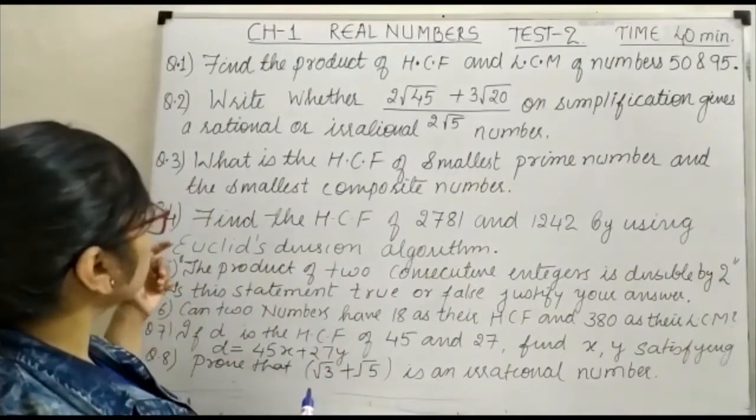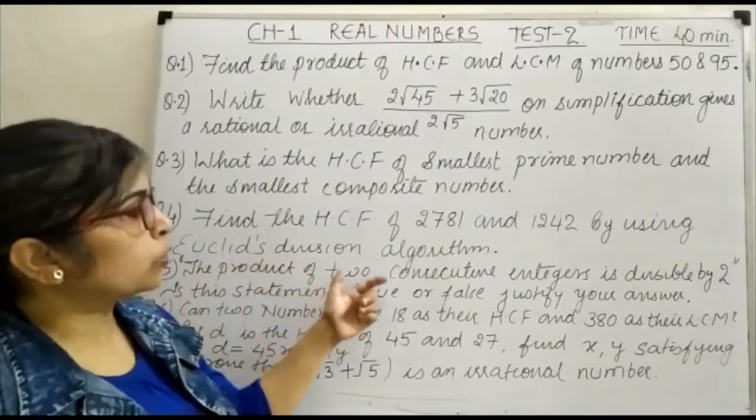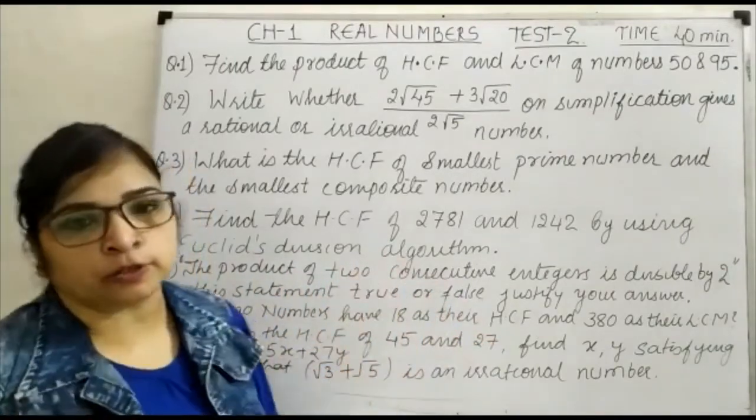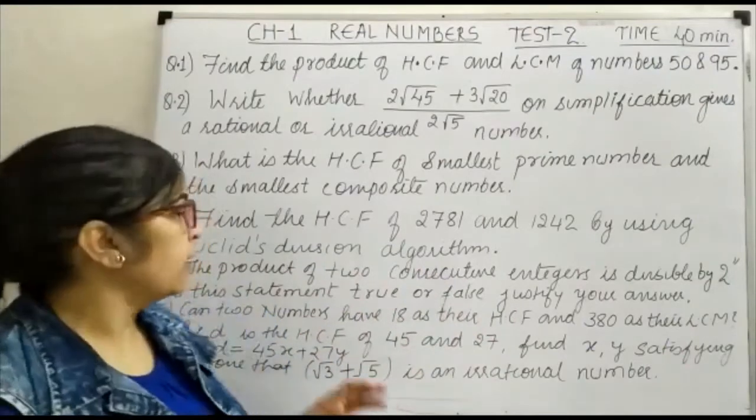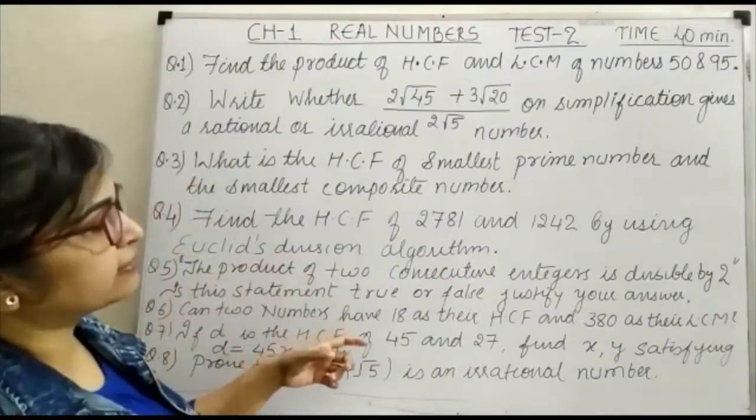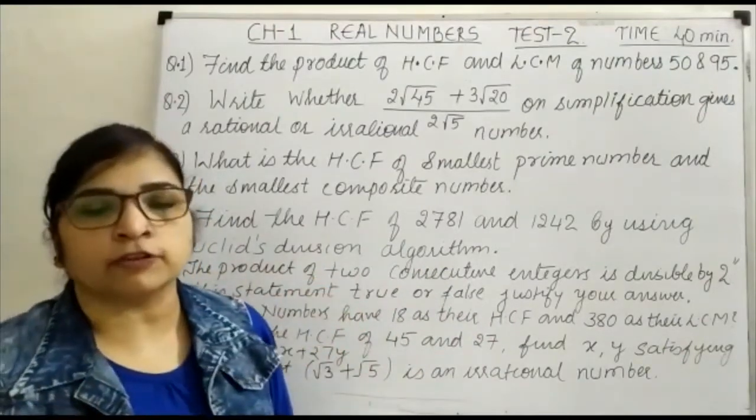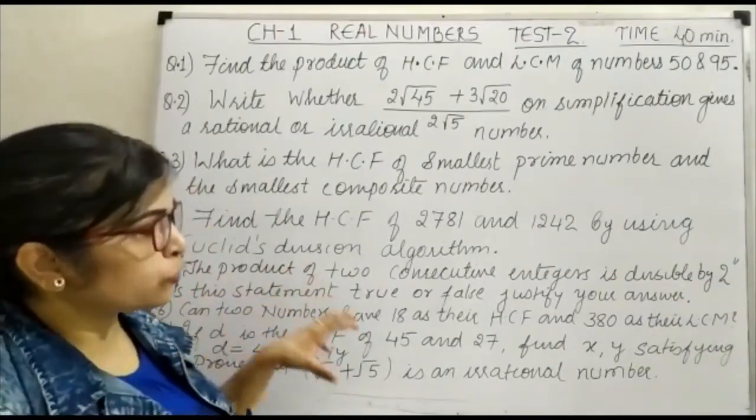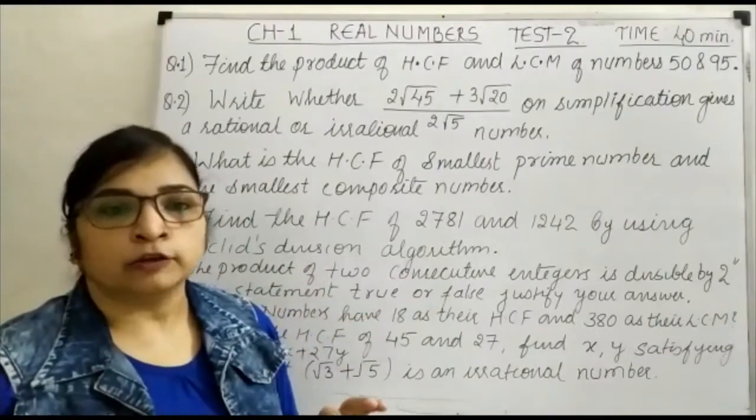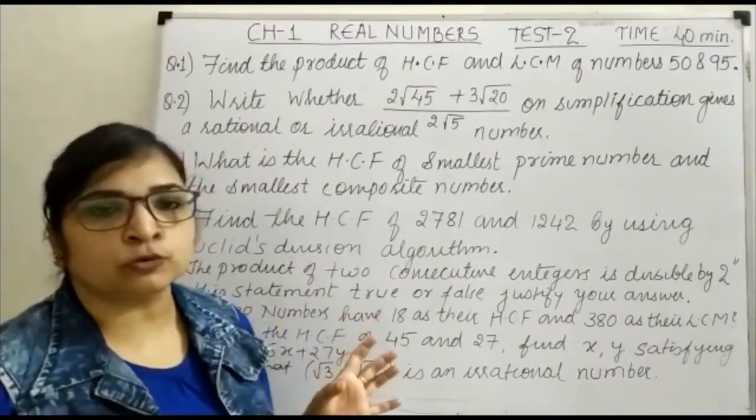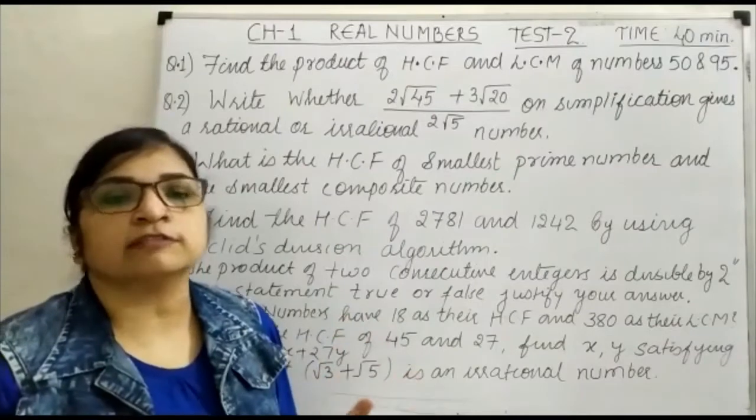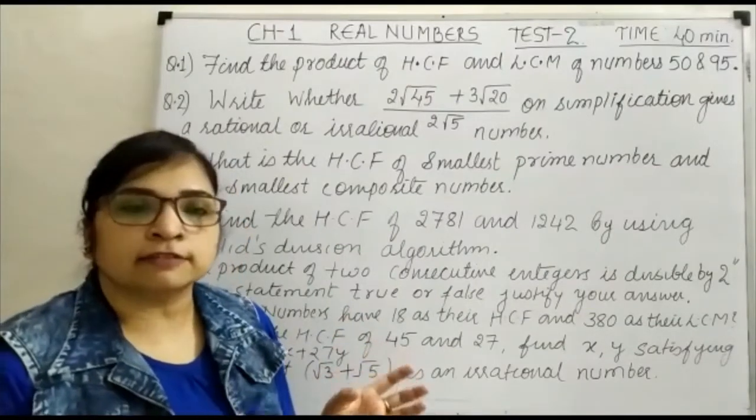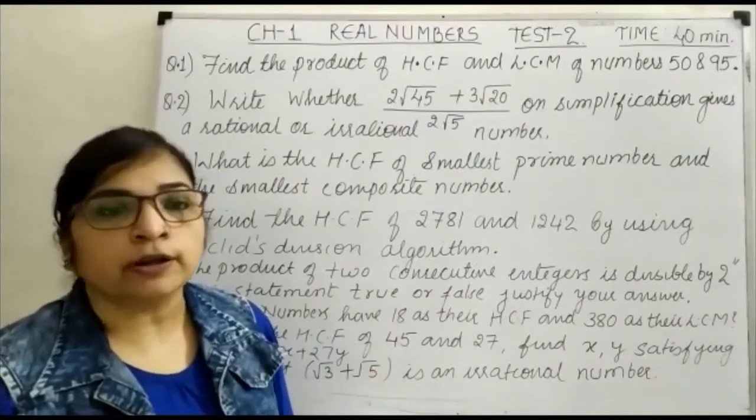Question number 5 says: the product of 2 consecutive integers is divisible by 2. Now what you have to do is determine whether this statement is true or false. You have to say whether it is true or false and justify your answer. Justify your answer means you have to write the statement with reference to your answer.